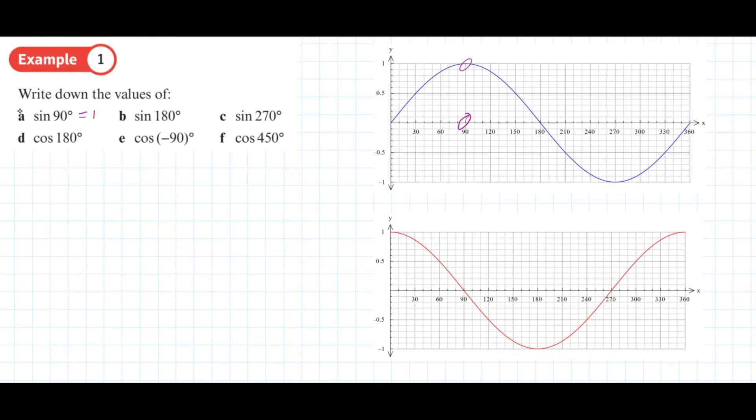Finding 180 degrees on our axis, there we go, 180 degrees. So we can say the sine of 180 degrees is 0.